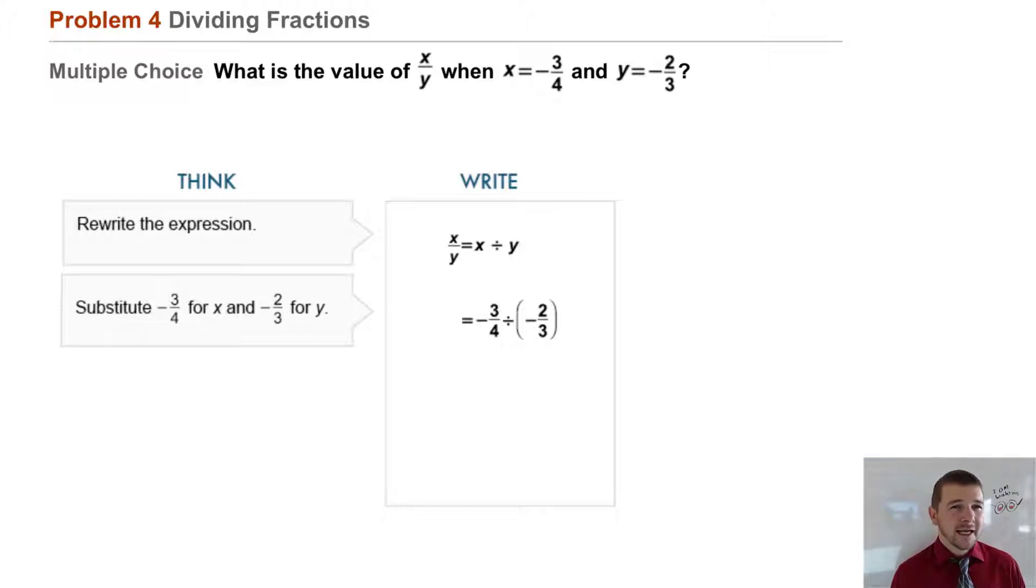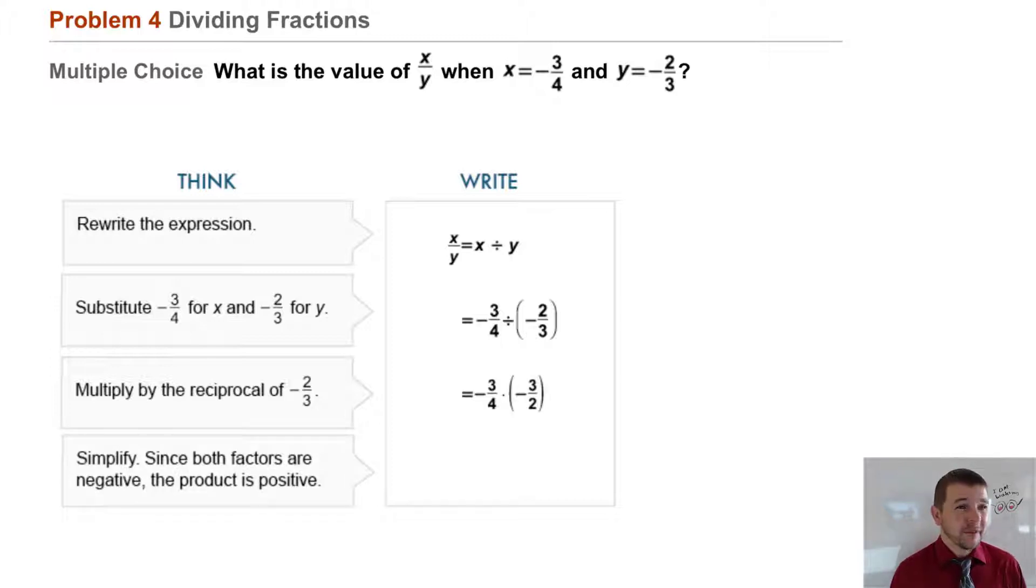We'll multiply by the reciprocal of -2/3, that's -3/2 times -3/2, and simplify. Since both factors are negative, the product is positive and that's 9/8. So back to our answer choices, the correct answer is D.